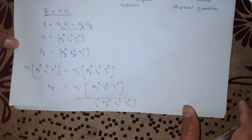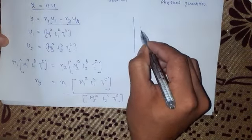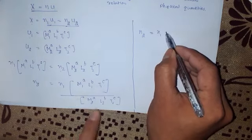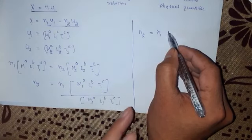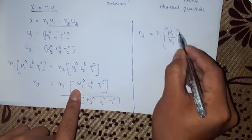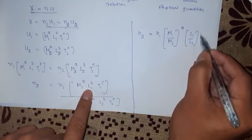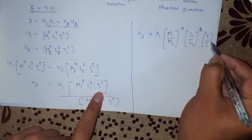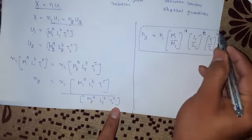Therefore, n2 can be determined by rearranging. Separating the dimensions of mass, length, and time, we get the conversion formula: n2 = n1 × (M1/M2)^a × (L1/L2)^b × (T1/T2)^c. This is the formula which we will use for conversion.